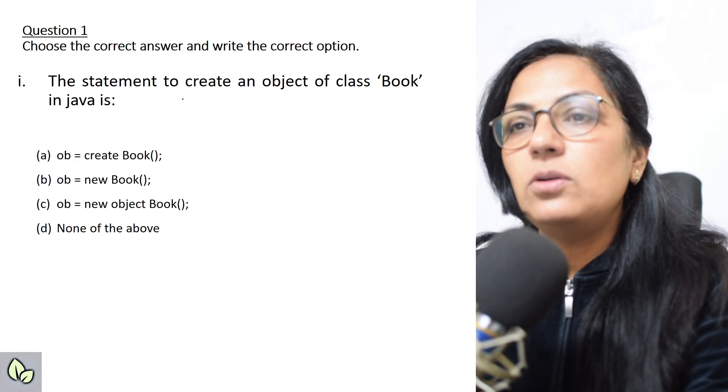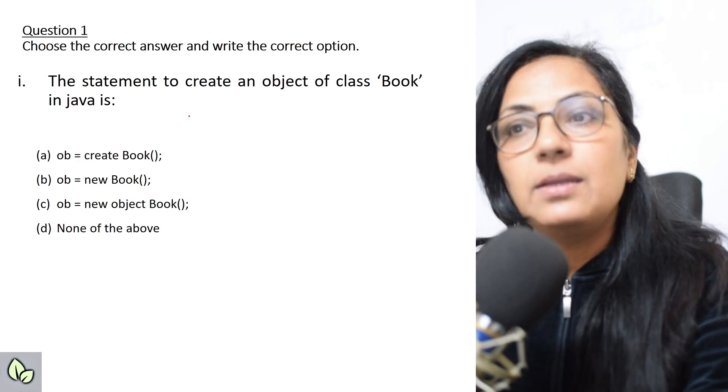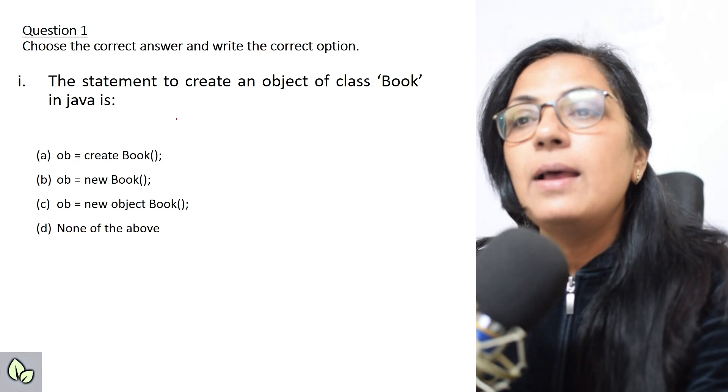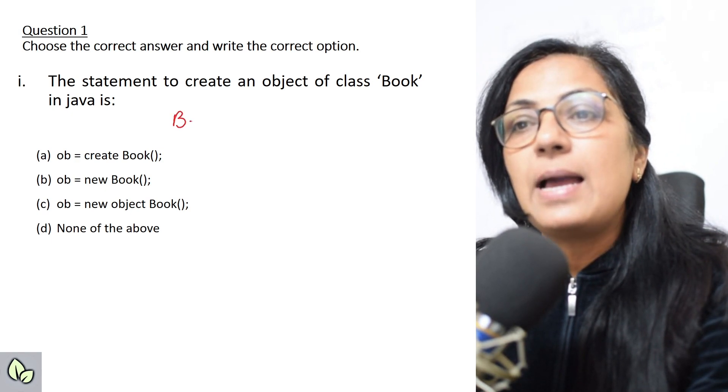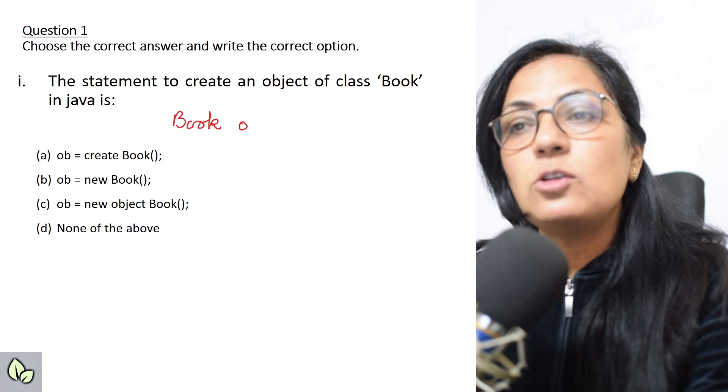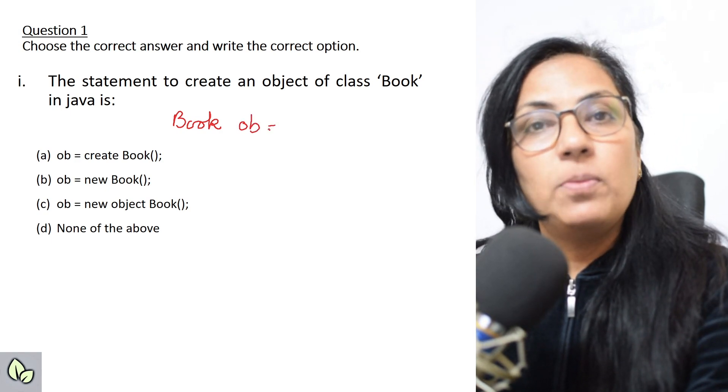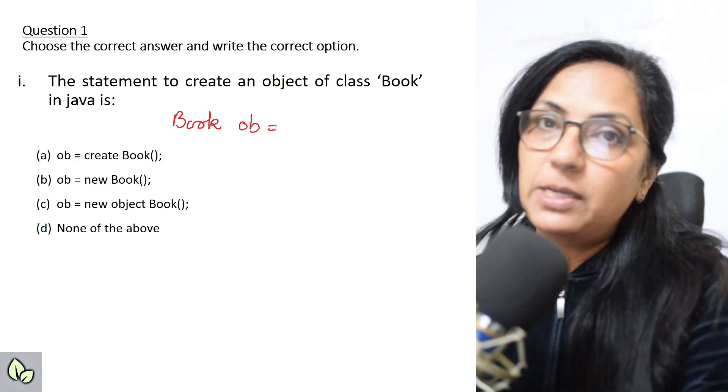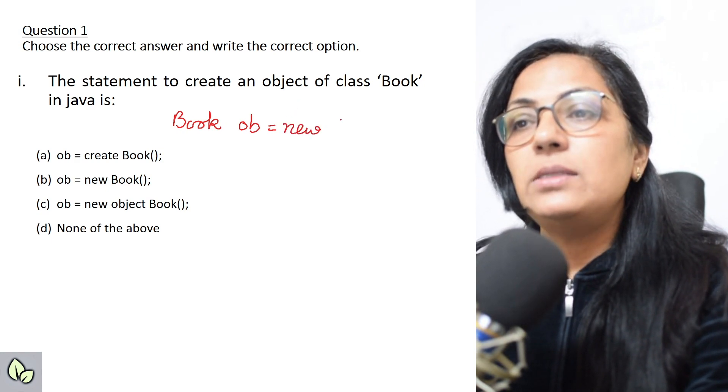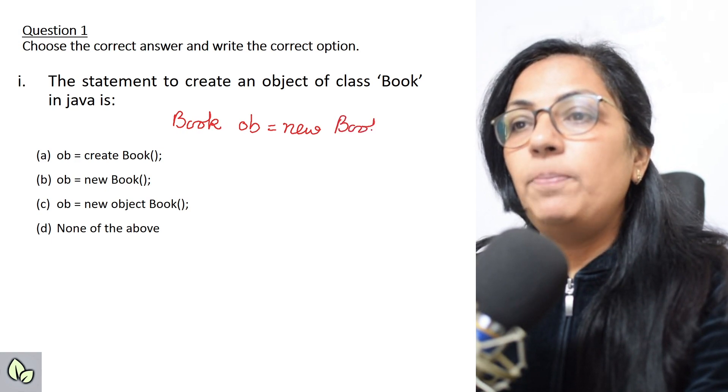Now you can resume and please check what is the syntax for creation of the object of a class. The syntax says class name, and the class name is written here Book, space object name. Suppose ob is the object name. If it is not mentioned, you can take any object name equals to new and class name.